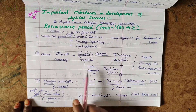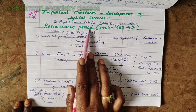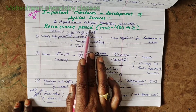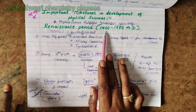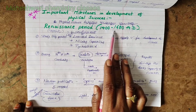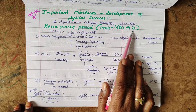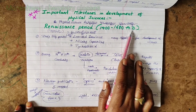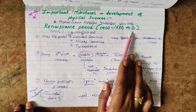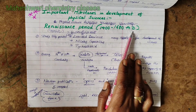This is the Renaissance period: 1400–1680 AD. AD stands for Anno Domini, meaning after Christ's birth.